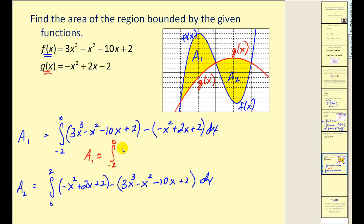For area one, we'd have three x cubed. The x squared terms cancel, and we'd have negative 10x minus 2x or minus 12x, and the two is also canceled.